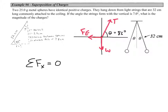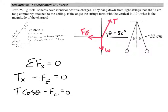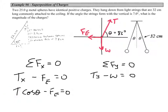We'll look at forces in both the x and y directions. In the x-direction, we have tension in x and the electric force, both summing to zero. Expanding this: T cosine θ minus the electric force equals zero. We run into a problem because we don't know the tension, so we look at the y-direction. In y, we have T sine θ minus mg equals zero.